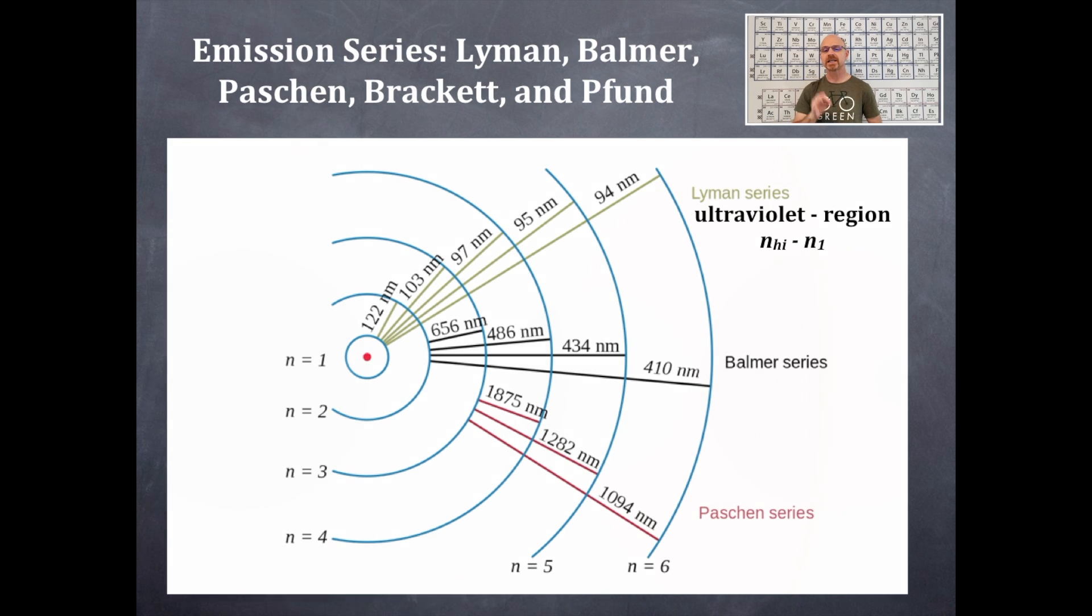Then the next one here is the Balmer series. And we've actually talked about the Balmer series already, but we didn't call it the Balmer series. It's in the visible region, and that's N of high to N of two. You should see that I've color-coded these here for you, and they do correlate to the atomic line spectrum for hydrogen that we see. So that should correlate very nicely.